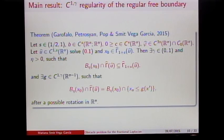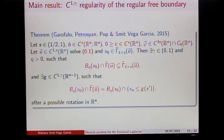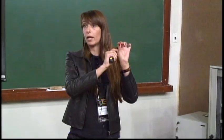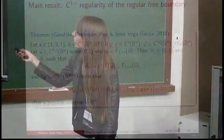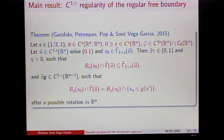Our main result is C^{1,γ} regularity of the regular part of the free boundary. Under the stated assumptions — S in (1/2,1), B in C^S, C positive and in C^S, obstacle in the appropriate class — if U-hat solves our fractional obstacle problem with drift and X₀ is a regular point, then first the regular set is relatively open, and moreover in a small enough ball around X₀, the free boundary is the subgraph of a function G of class C^{1,γ}, giving us C^{1,γ} regularity of the free boundary.